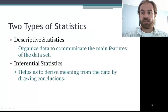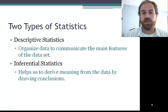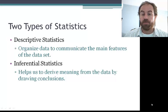So we have two types of statistics, descriptive and inferential. Descriptive statistics organize data to communicate the main features of the data set. It basically describes the data to us. Inferential statistics helps us to derive meaning from that data and then draw conclusions.